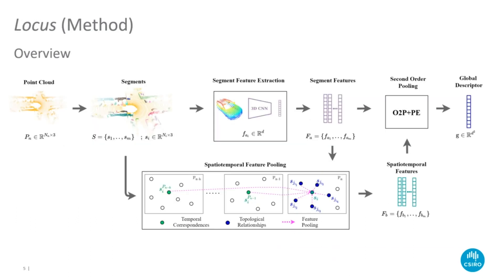This is an overview of our pipeline. First, the input point cloud is decomposed into a set of segments. For this set of segments, we obtain two sets of complementary features.